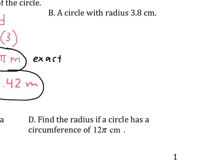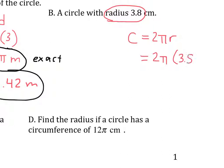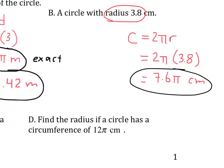Now in this next one, we have a circle with a radius of 3.8. Since I have radius, I'm now going to use the other formula, 2 pi r. And plug and play, like we did before. In this case, I put 3.8 in there. And my exact answer would be 7.6 pi centimeters — that's my exact answer, my circumference: 7.6 pi.